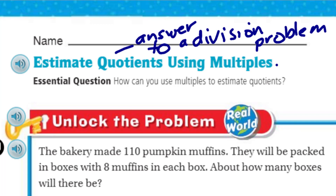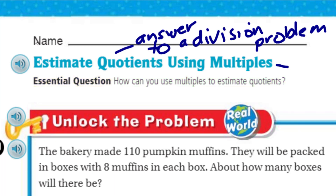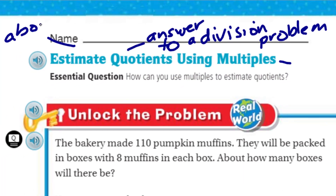And then multiples — you may recall from a previous lesson that multiples has to do with finding... well, it's defined below, so we'll save that. Let's go ahead to our essential question. This is our learning target, our objective, our learning intention. It's: how can you use multiples to estimate quotients? And estimate — remember, that's just kind of like an about number. Not exact, an about number.